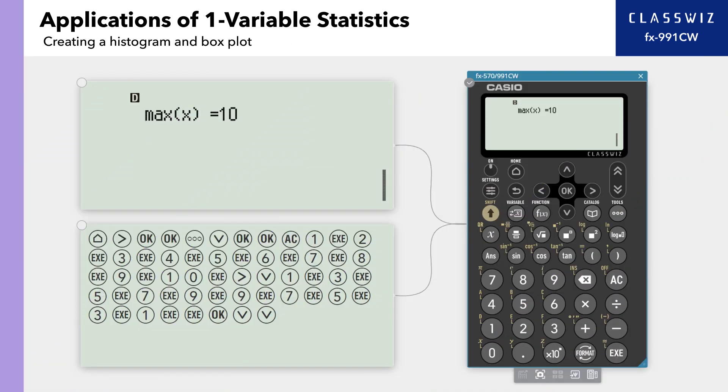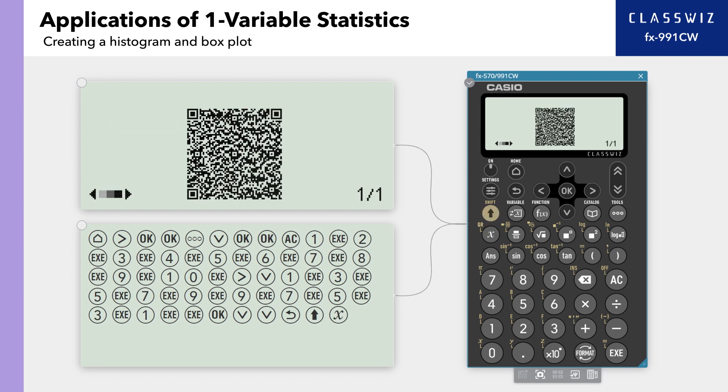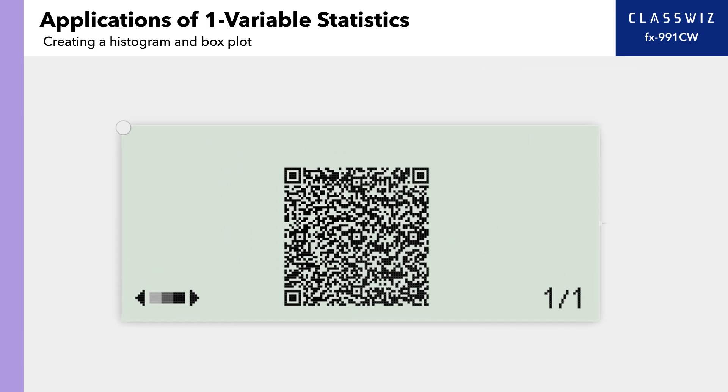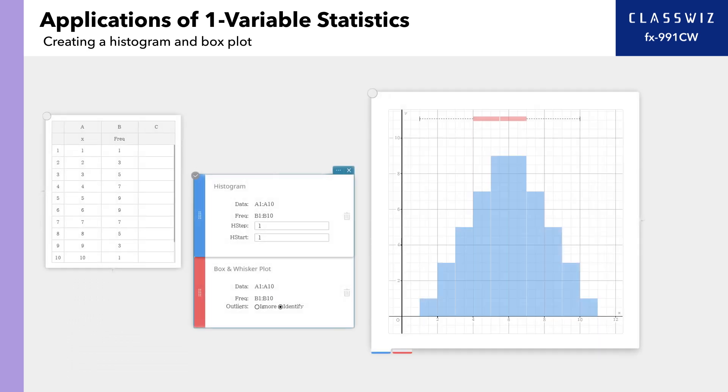You can use your smartphone or other device to see a histogram and box plot of the statistical data entered into the calculator. Press Back. On the Data Entry screen, press Shift, then X to create a QR code. Read the QR code with your smartphone or other device to see the created histogram and box plot.